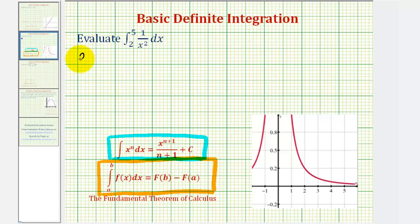So we have the definite integral from two to five of one divided by x squared dx. Before we apply the power rule of integration though, we'll have to change the form of our function.